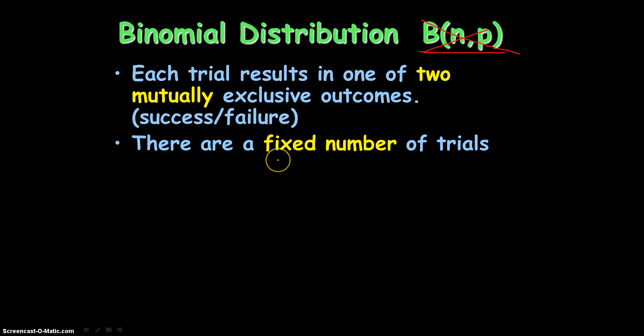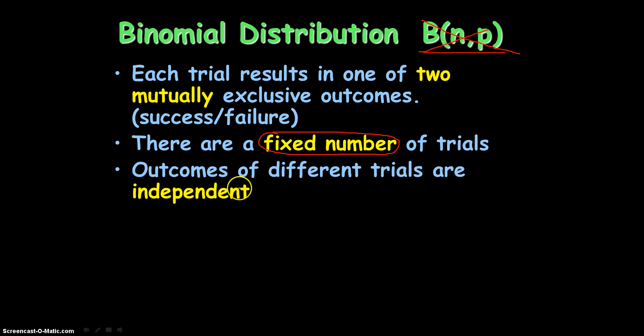There are a fixed number of trials. This is very important. This is usually a key giveaway of a binomial distribution. Make sure you always look for that in a problem, whether or not there's a fixed number of trials. Outcomes of different trials are independent. All this means is that what you do in the previous trial will not affect the next trial. That's what it means when trials are independent. What happens in one does not affect the other or the next.